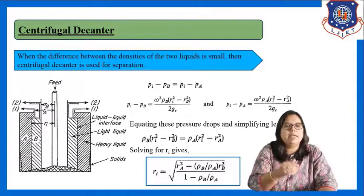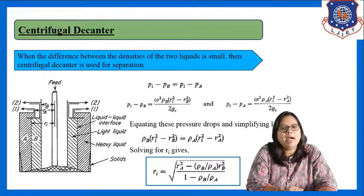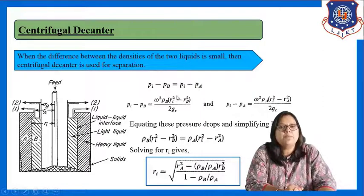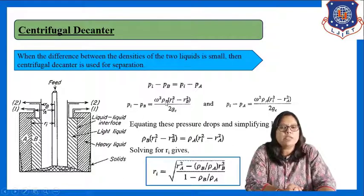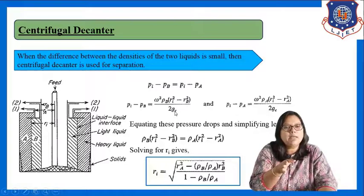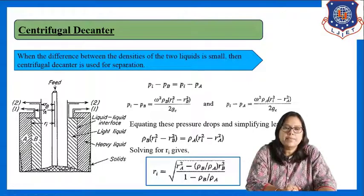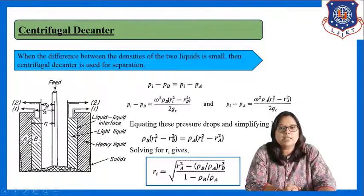Similar to the gravity decanter, if we apply hydrostatic equilibrium, the equation becomes P_I − P_B = P_I − P_A. Here, P_I − P_B = omega² · rho_B · (ri² − R_V²) / (2·G_C), and similarly P_I − P_A = omega² · rho_A · (ri² − R_A²) / (2·G_C), where omega is angular velocity. In the figure, the line shows the heavy liquid, the light liquid, and the liquid-liquid interface.